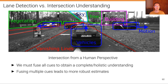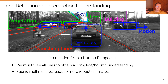So you need to fuse all kinds of cues in order to obtain a complete and holistic understanding, such as where are the vehicles, where are they going, where are the lanes and the road, where are the buildings, where's the sky, where are the vanishing points. Only if you consider all of these do you get a holistic understanding of the scene. Fusing multiple cues leads to more robust estimates, and in the work I'm going to show you, we try to fuse information from all of these aspects of the scene — and tracking is one of them.